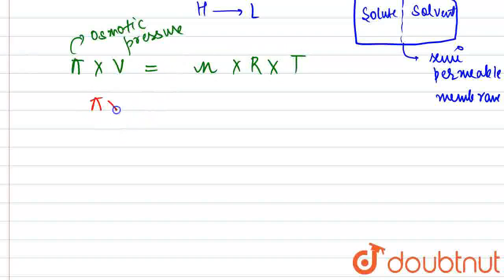Now, the number of moles can also be written another way: that is mass of the solute divided by molar mass.